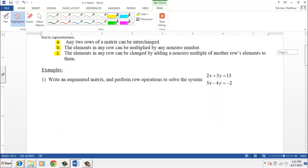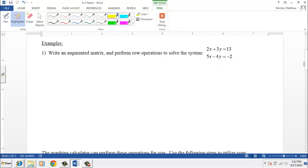In order to use row operations to solve systems, we need to first put equations into a matrix. A matrix is a rectangular array of numbers organized in rows and columns. An augmented matrix is split up into two parts by a vertical line. If I wanted to take the system in this problem, 2x plus 3y equals 13, and 5x minus 4y equals negative 2, if I wanted to put that in an augmented matrix, it would look like the following.